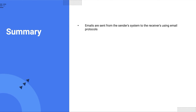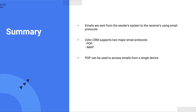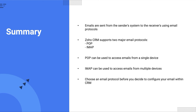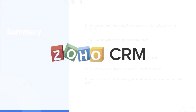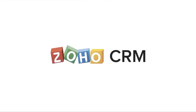To summarize what we've learned so far: emails are sent from a sender's email address to a receiver's email address with the help of email protocols. Zoho CRM supports two types of email protocol — POP and IMAP. POP can be used to access emails from a single device. IMAP can be used to access emails from multiple devices. Make sure you choose an email protocol that's suitable for your needs before you configure your email with the CRM. We'll see you next time. Bye.